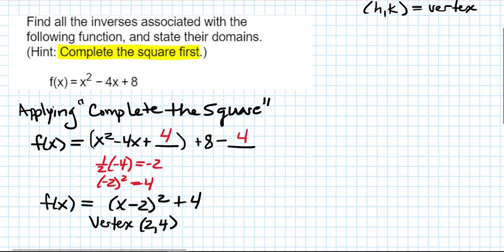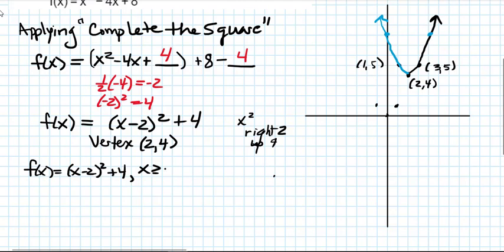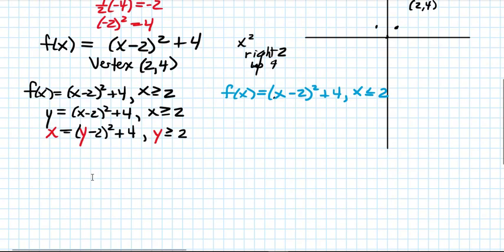Let's get a quick graph of this function. You can see it's not a one-to-one function, but if we break it apart at the vertex, the left side is one-to-one and the right side is one-to-one. So we break f into two pieces: f of x equals x minus 2 squared plus 4 for x greater than or equal to 2 in black, and f of x equals x minus 2 squared plus 4 for x less than or equal to 2 in blue. We find the inverse of each by switching x and y coordinates and solving for y. Be sure to continue writing the restriction — that will guide us as we go.